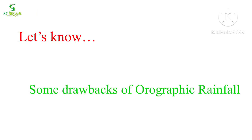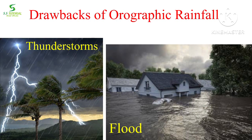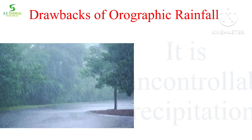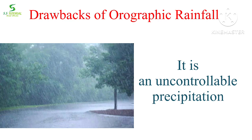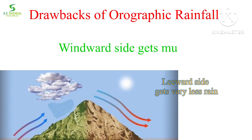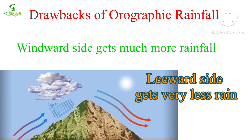Though all types of rainfall have many benefits, orographic rainfall has some drawbacks. Sometimes orographic rainfall causes floods and thunderstorms which can cause harm to many lives. This type of precipitation is uncontrollable. In terms of rainfall distribution, a huge difference can be seen between the windward slope and leeward slope — the windward side gets much more rainfall but the leeward side gets very little.